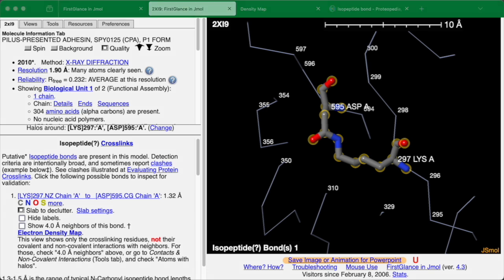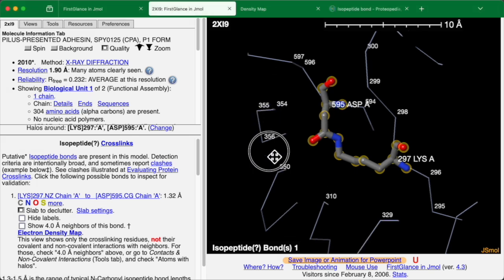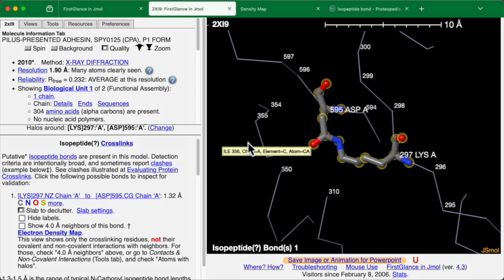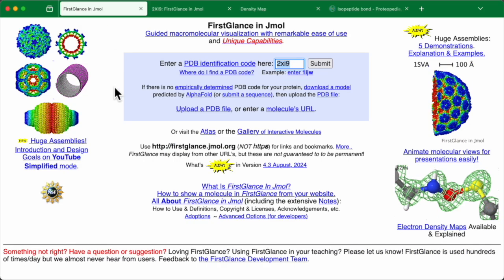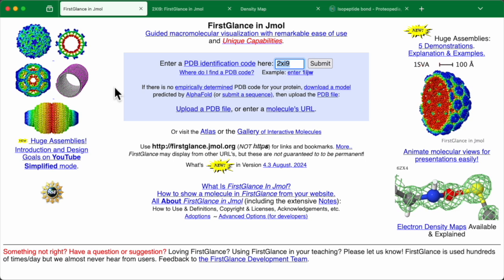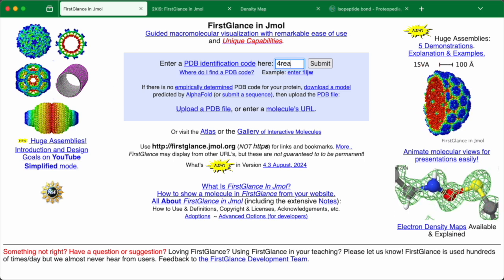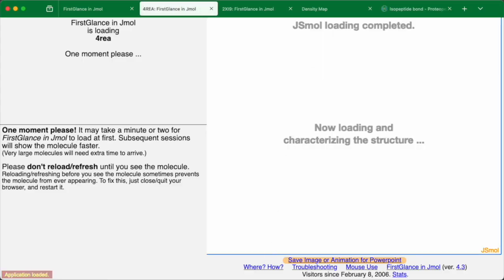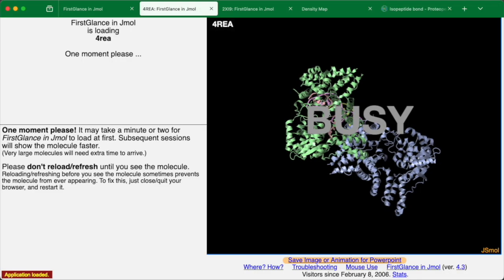We can contrast this nice example with another case where a putative isopeptide bond is not real. To do that, we'll go back and look at another molecule, namely 4REA. So I've entered 4REA in the slot here. I'm clicking submit. Here comes the molecule.